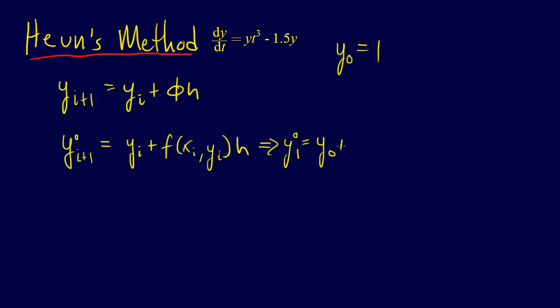So y₁⁰, because this isn't going to be the y₁, this is just a temporary holding variable. So that's going to be equal y₀ plus f, and so we don't have an x, it's a t. So it would be t₀, y₀ times h. So that's going to equal y₀ plus y₀t₀³ minus 1.5y₀. So that's going to equal, we already did this before, and that equals plus 0.25. So we computed that out.